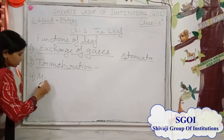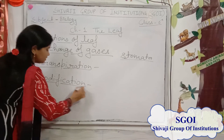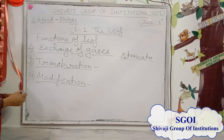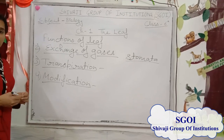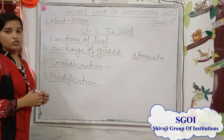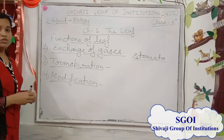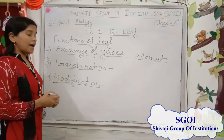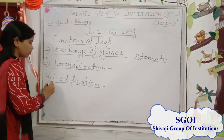The next function is modification. In some plants, leaves are modified into spines. You can see the cactus plant, which is found in desert areas. In desert areas there is a deficiency of water, so the leaves of cactus plants are reduced and modified into spines, which reduces water loss. That is the role of modification.